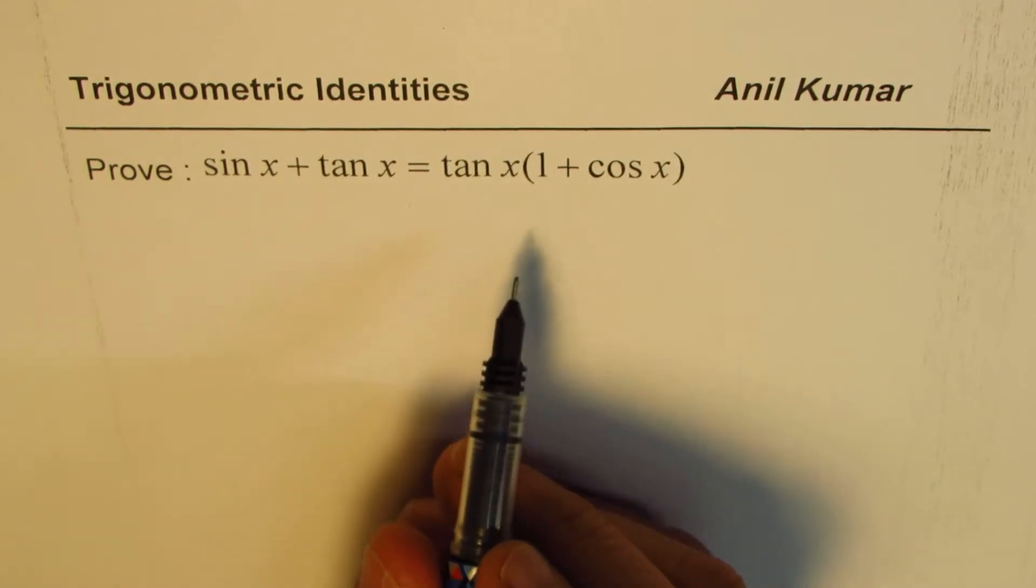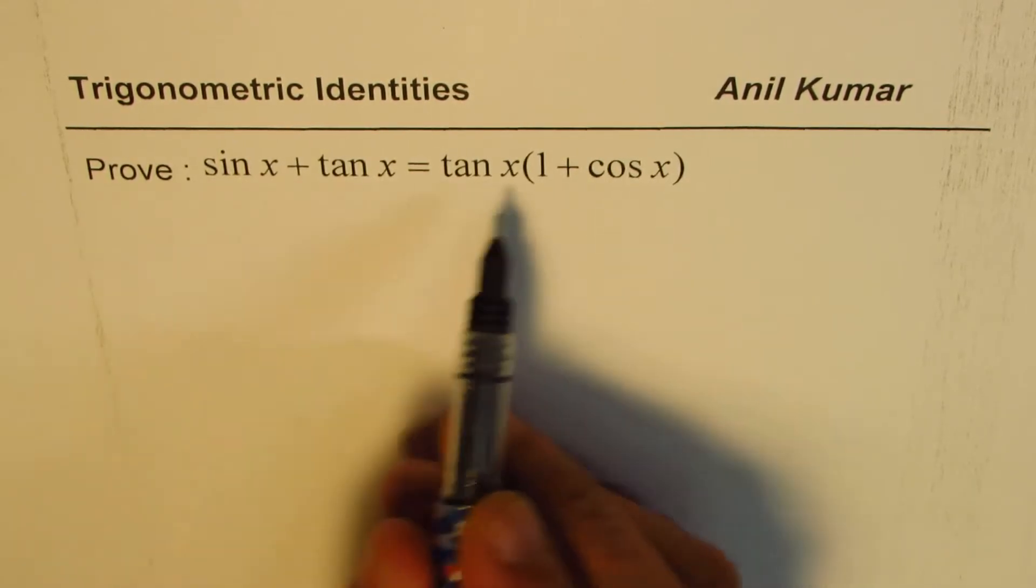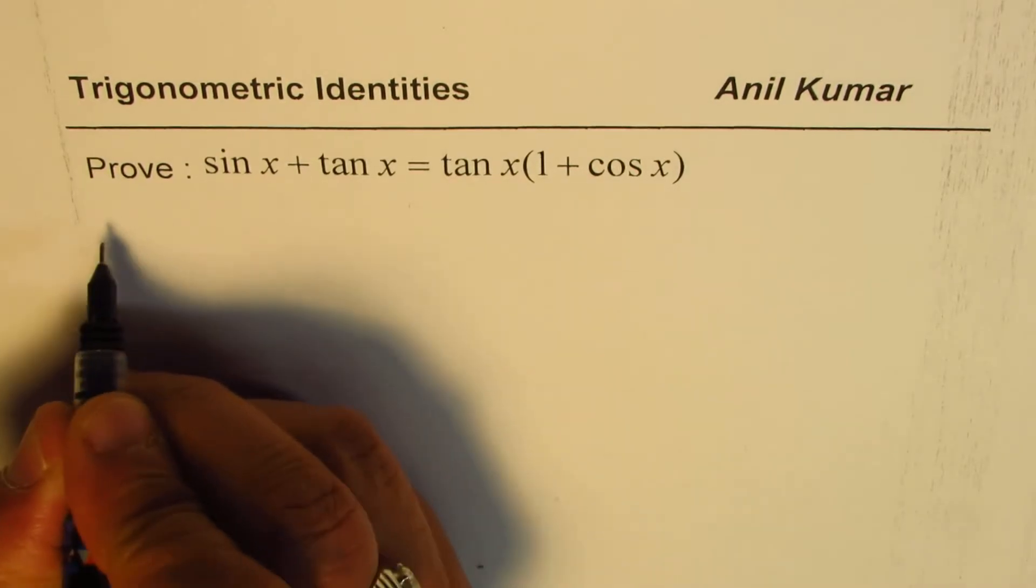Now for such an identity, we could start from the left side or from the right side. So let me do both processes.